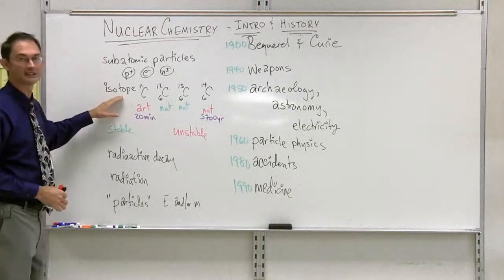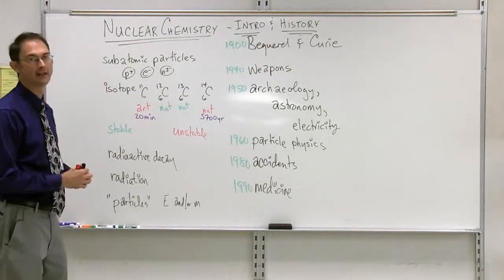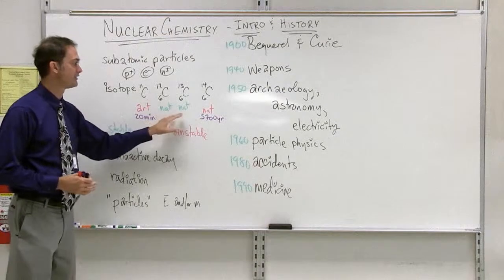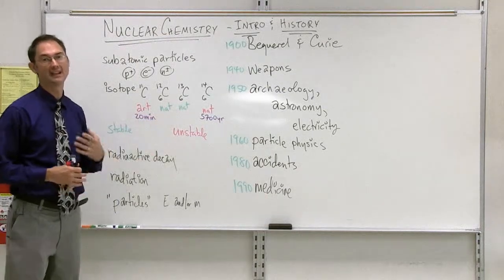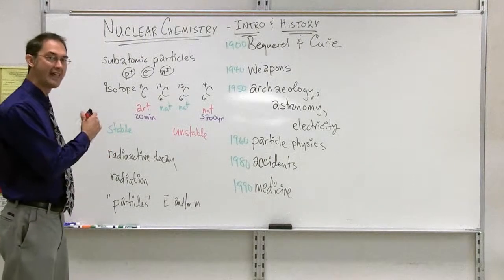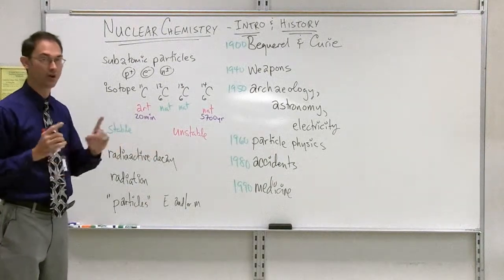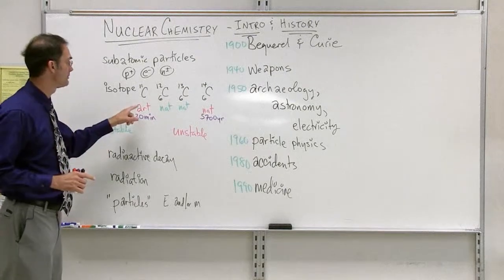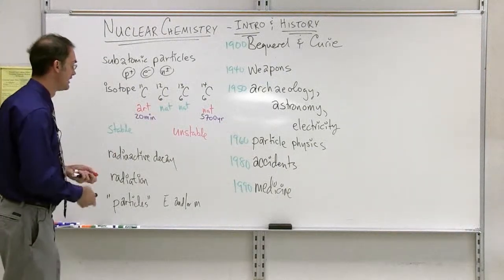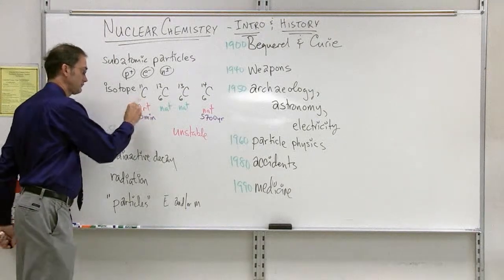We've also studied the concept of isotopes. Let's take a look at carbon in particular. Carbon is made up of stable isotopes — two and three are natural in particular — but carbon has exhibited a number of isotopes all the way from having eight constituents in the nucleus up to 22. In every case, carbon will have six protons.